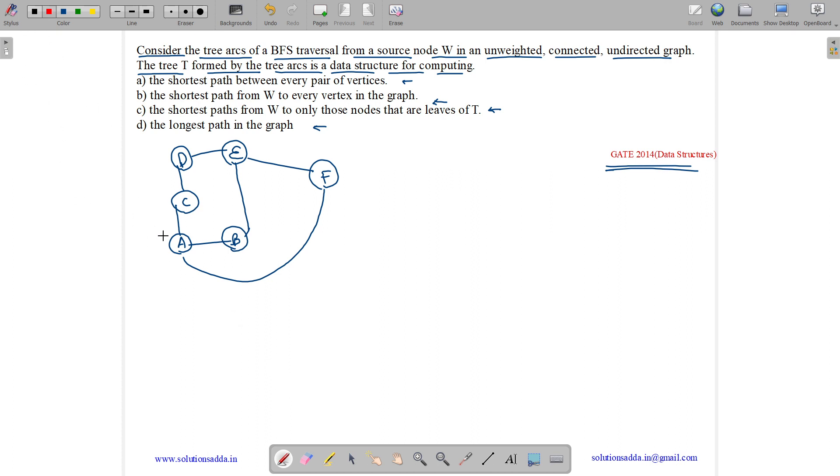So BFS will start from any vertex. Let us suppose we start from vertex A. What it will do next is it will go to all its neighbors. So A will go to B, C, and F. B is neighbor, C is neighbor, and F is neighbor.